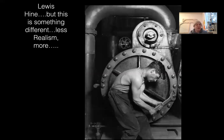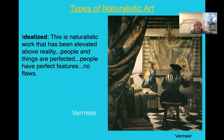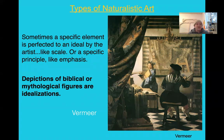Later on, after all that documentary work, something different happened — his work became less realistic and more idealization. So idealization is another type of naturalism, and we separate that from realism. Idealized work is naturalistic but elevated above reality — people and things are perfected, people have perfect features, no flaws, the scene and lighting are just perfect. Sometimes a specific element is perfected to an ideal by the artist, like scale or emphasis — those principles are honed in to make the scene just perfect.